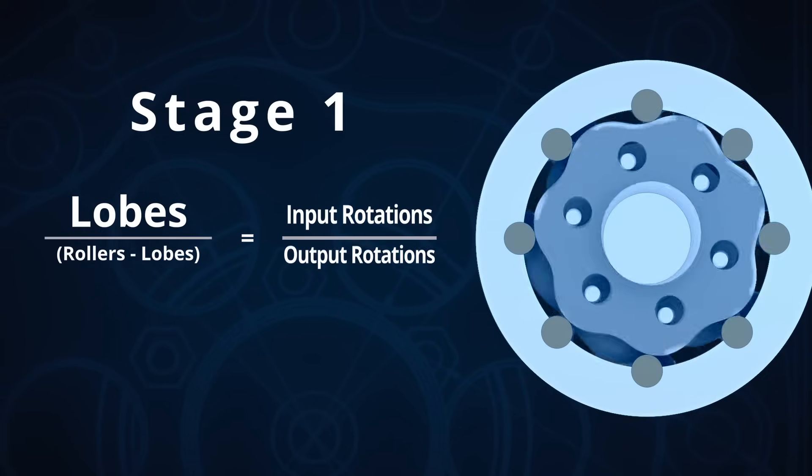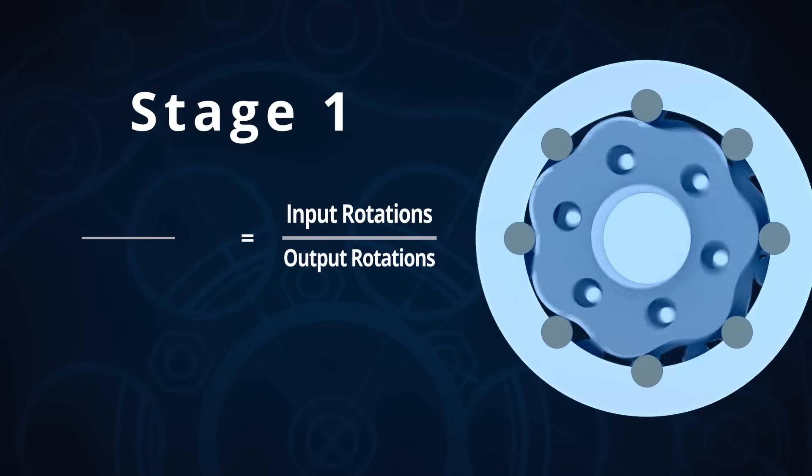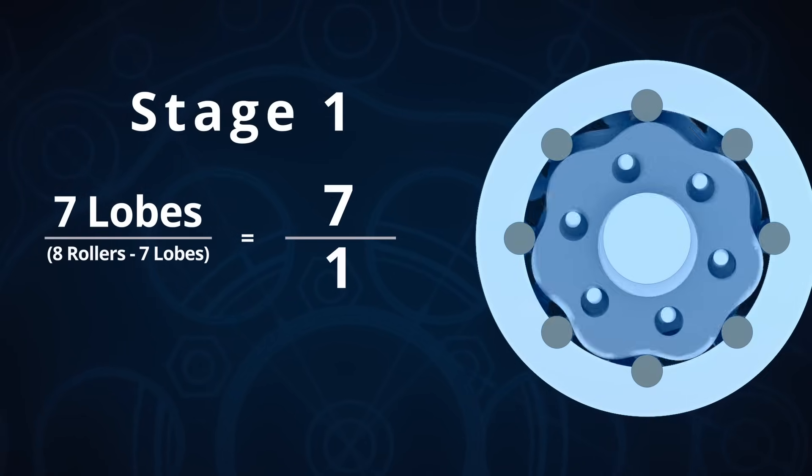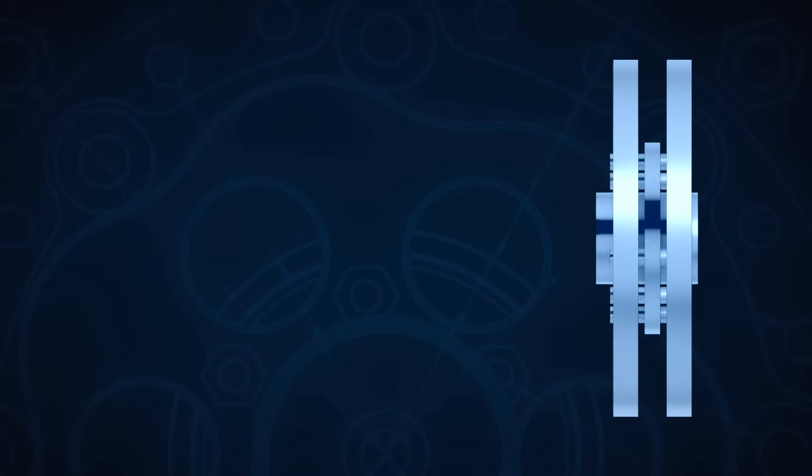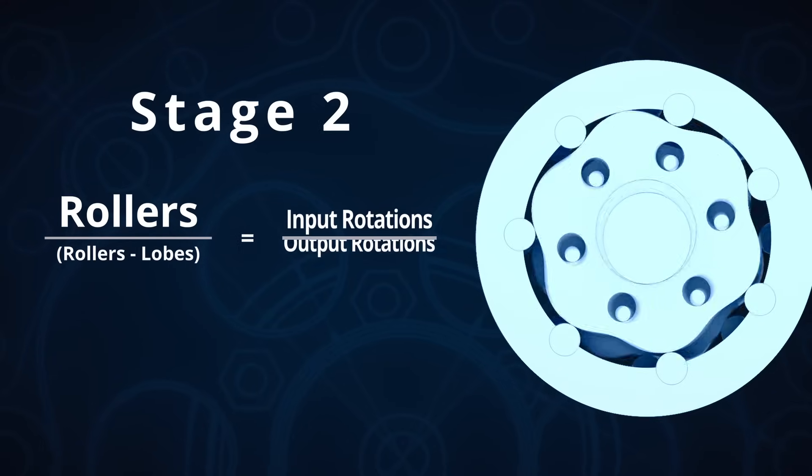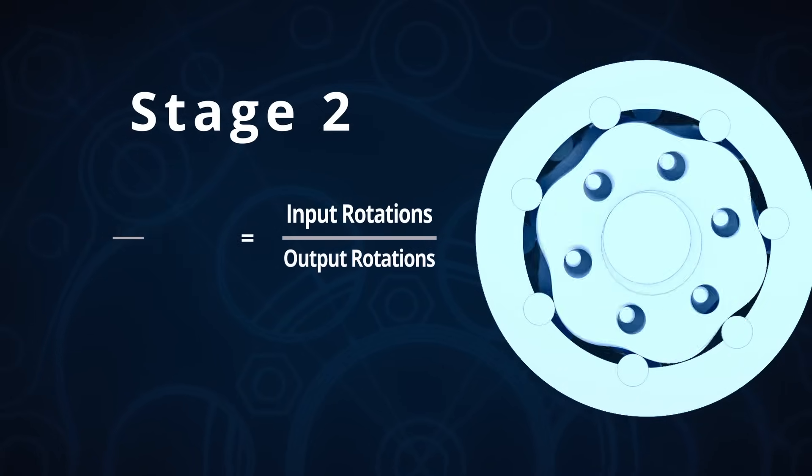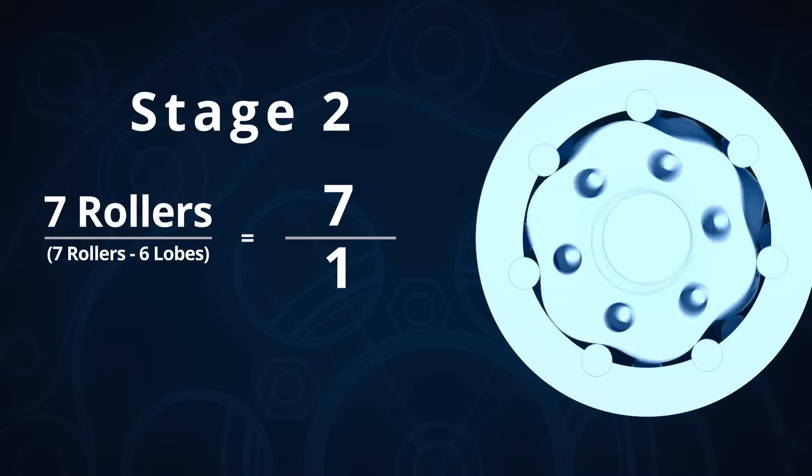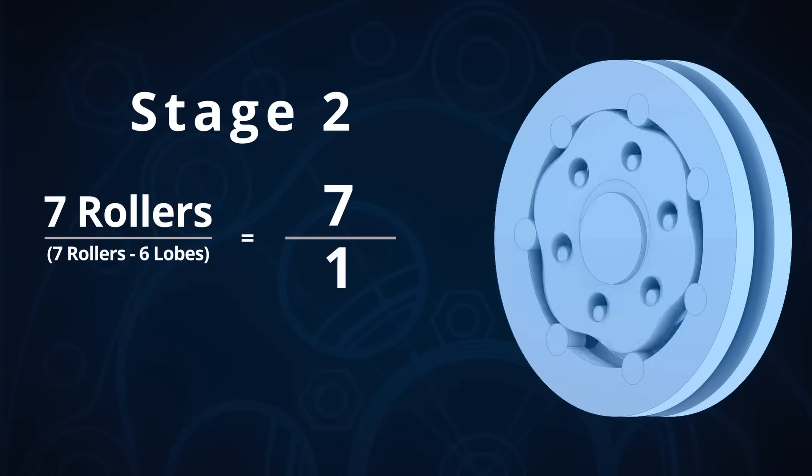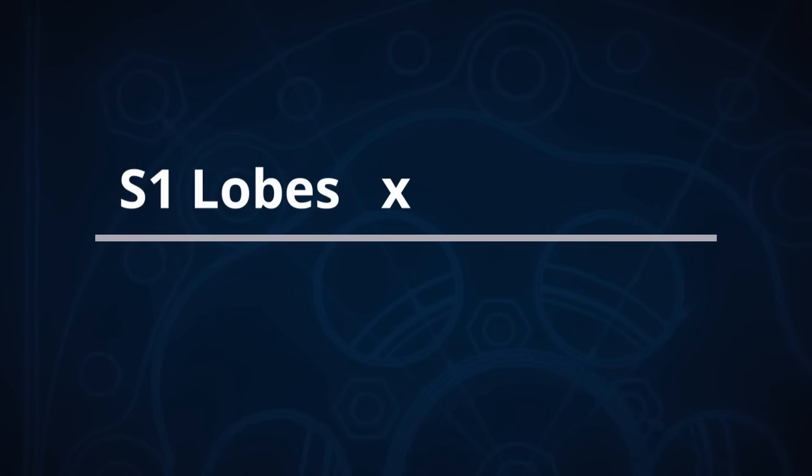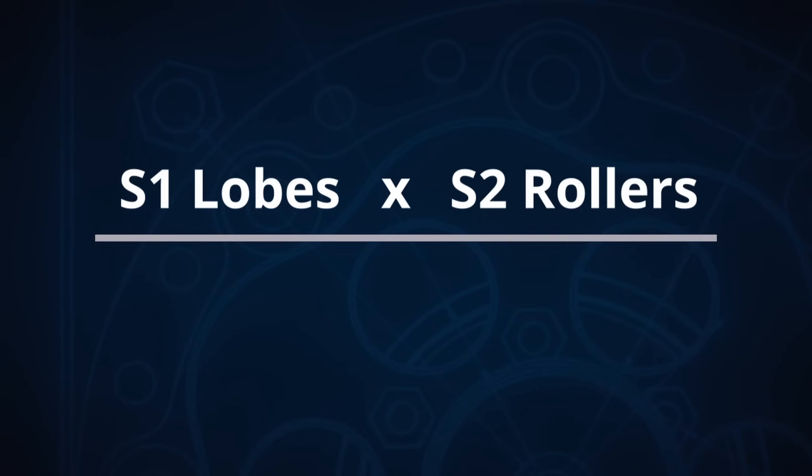Basically, our equation for the total reduction ratio has changed once again. Now, it's the output ratio of the first stage multiplied by the output ratio of the second stage. And remember, we determined that the output of stage 2 was actually now based on the number of rollers in the outer ring, as opposed to the number of lobes. To frame it another way, our equation now looks more like this. The number of lobes in stage 1 multiplied by the number of rollers in stage 2.